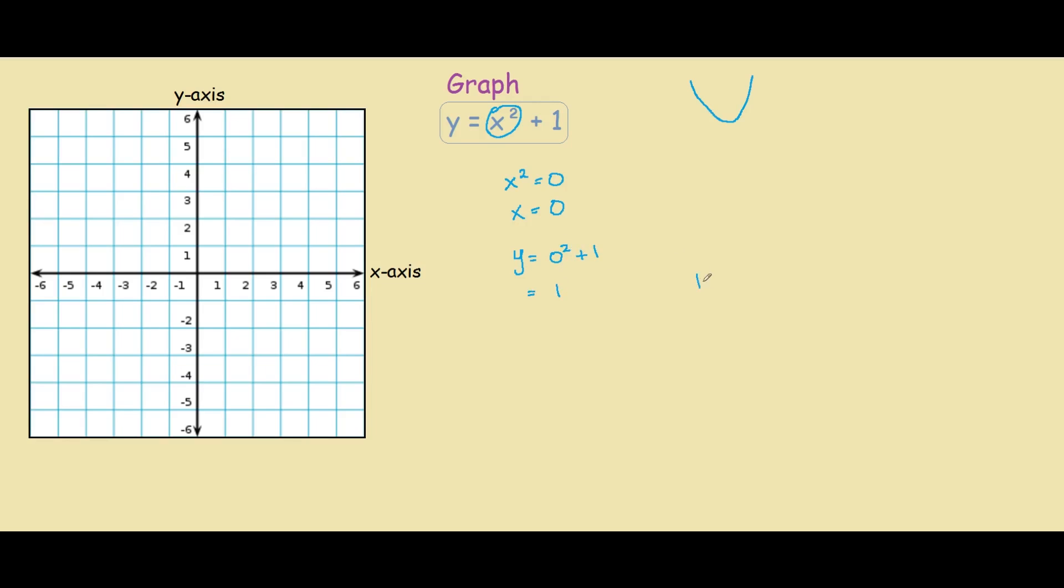So our turning point is at x equals 0 and y equals 1. On the parabola, this would be our turning point, basically when the parabola starts turning in the opposite direction. So on our graph, this would be located at 0, 1.